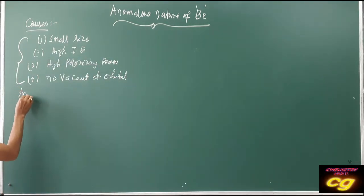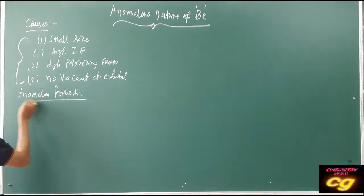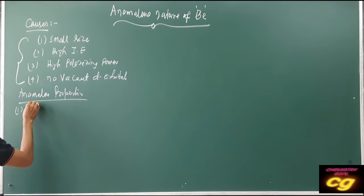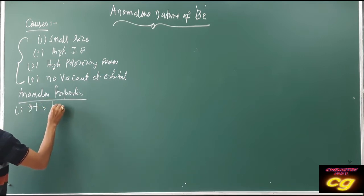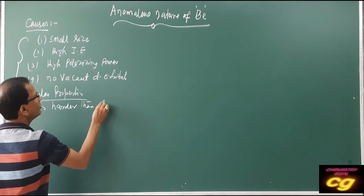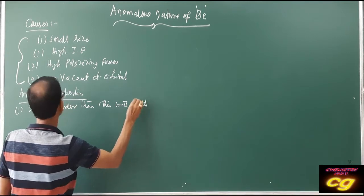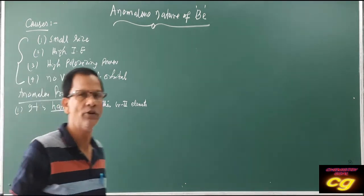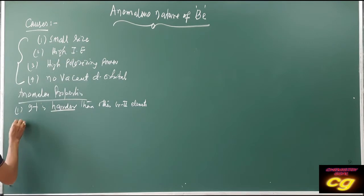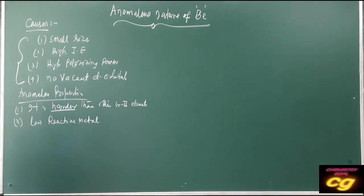The anomalous properties of beryllium: First, beryllium is the hardest — it is harder than other Group 2 alkaline earth metal elements.